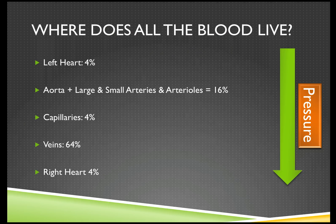This slide outlines where the majority of blood resides in the body. Within the left ventricle and left atrium there's only 4 percent. The aorta, large and small arteries, and arterioles—remember the arterioles are the principal resistance vessels—contain 16 percent of circulating blood volume. The capillaries, which is the only place where gas exchange can occur, only have 4 percent. Veins have a staggering 64 percent, and the right heart similar to the left heart has about 4 percent.